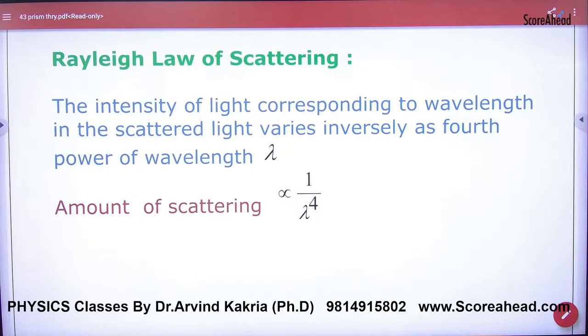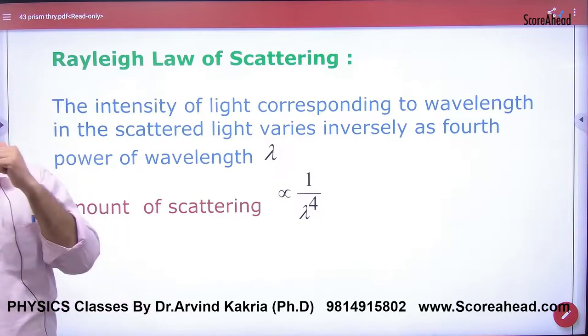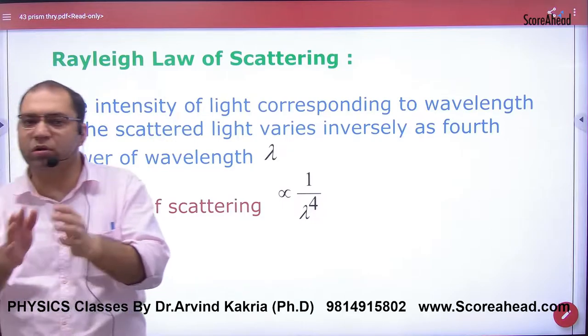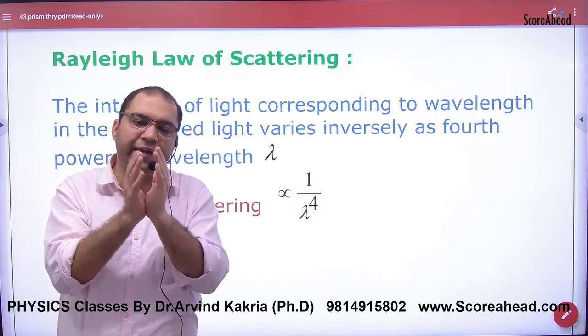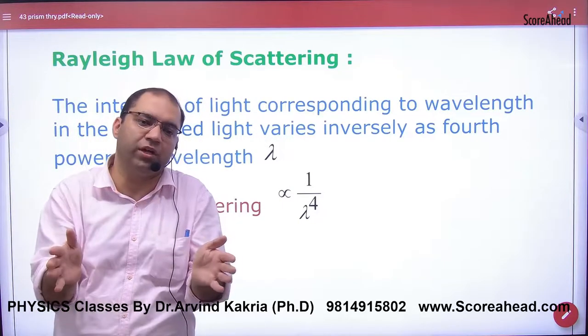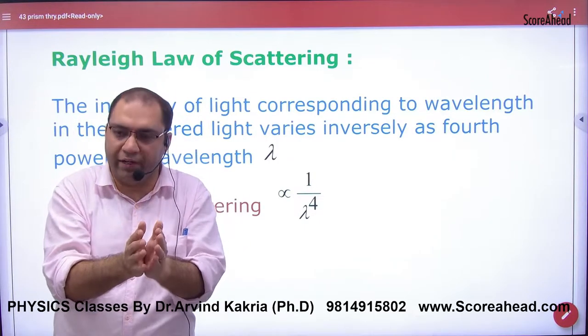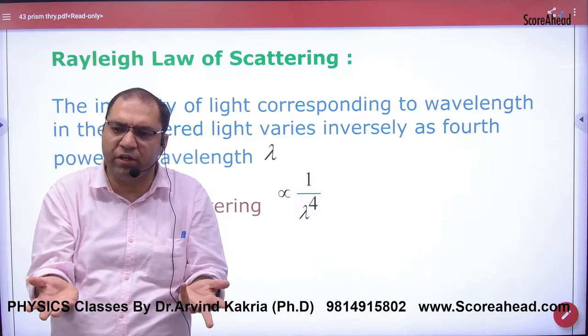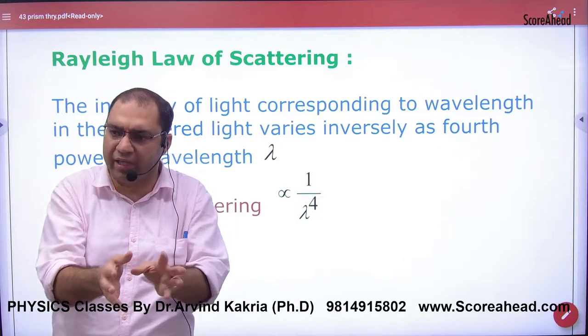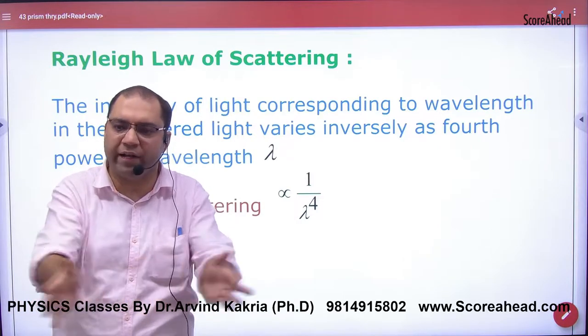Next is Rayleigh's Law of Scattering. Rayleigh is a scientist who explained that when white light splits into seven colors and travels through a medium, if the wavelength of light matches the size of particles in the medium, approximately the same, then light scatters.